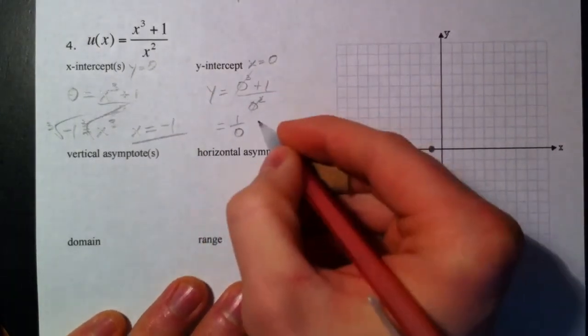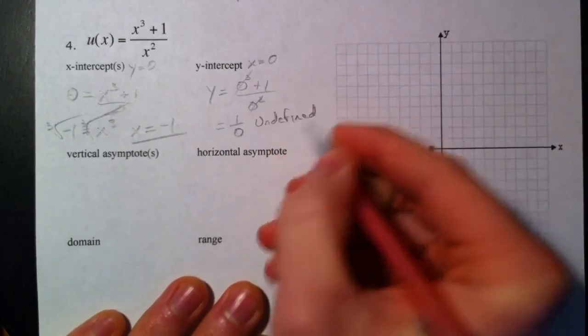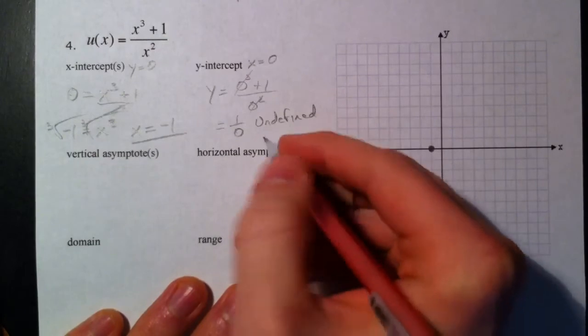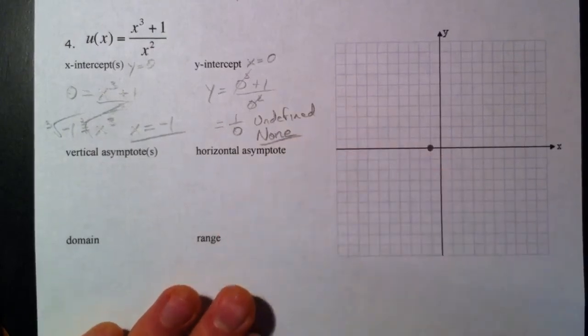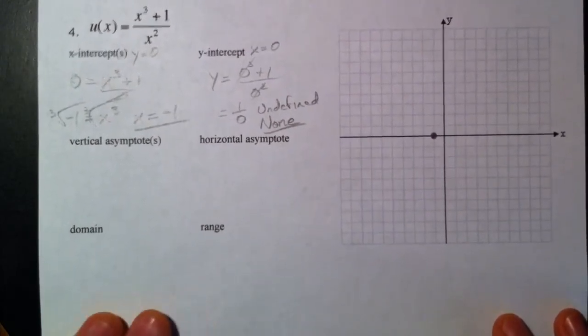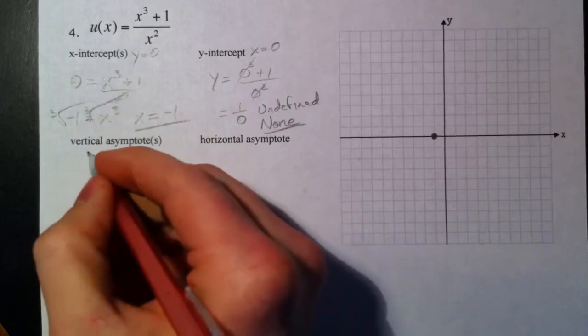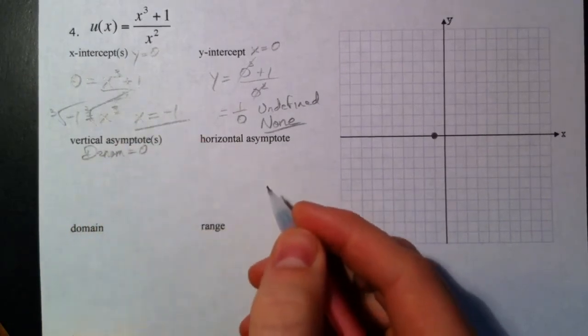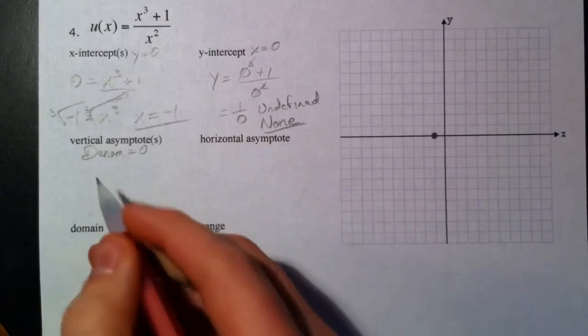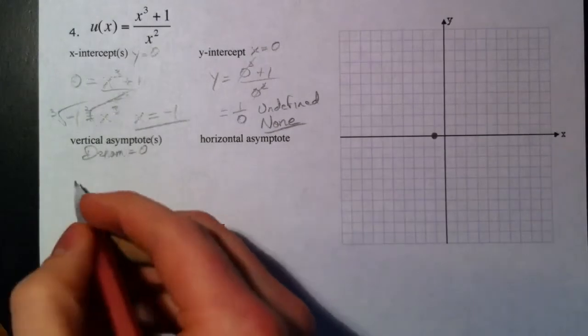This is undefined, and so we actually know that we're not going to have any y-intercepts. Vertical asymptotes - that again has everything to do with the denominator. Set the denominator equal to 0. We've got that on our second page of notes. And so then we set x² equal to 0.